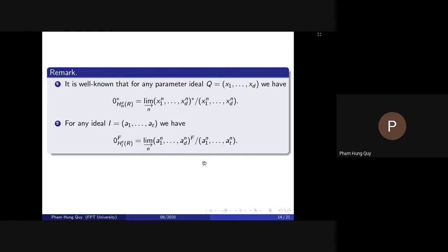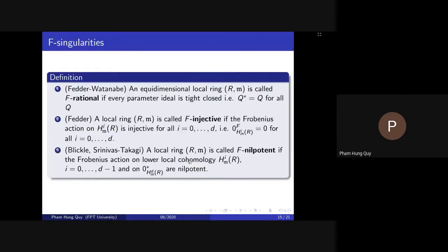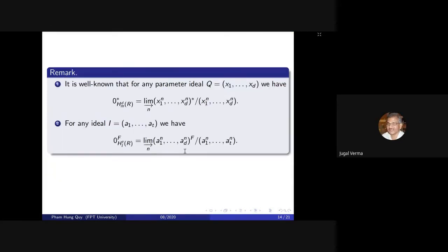For the top local cohomology, it is well known that the tight closure of the zero submodule of the top local cohomology module is directly related to parameter ideals. And for the Frobenius closure, we have a similar statement.